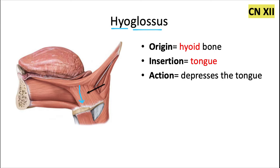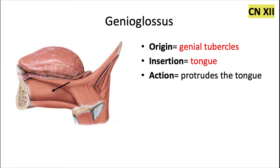The hyoglossus is innervated by the hypoglossal nerve. The genioglossus is also innervated by the hypoglossal nerve. It originates from the genial tubercles, also known as the mental spines — the same place where the geniohyoid muscle is located. You can actually see that muscle right there. The genioglossus is this really big muscle.